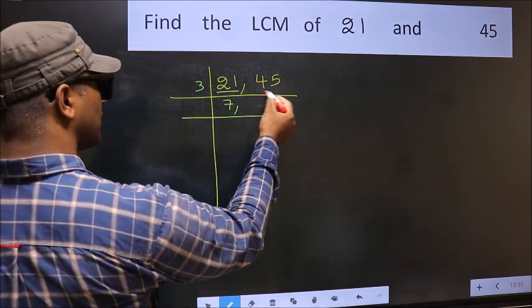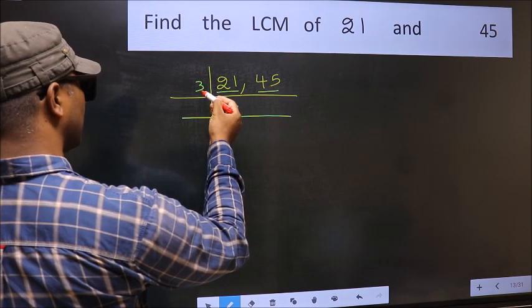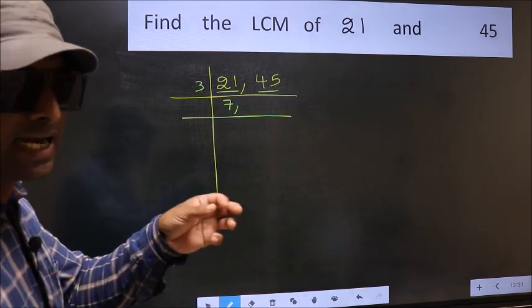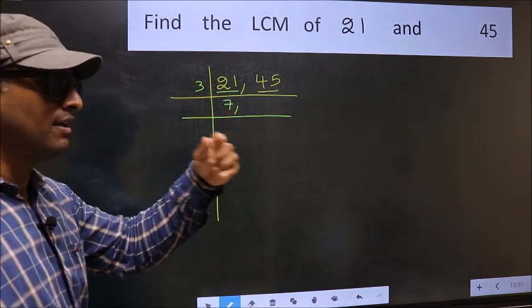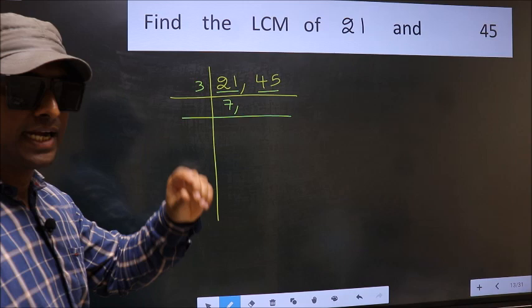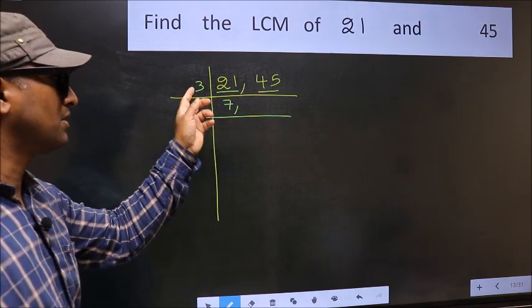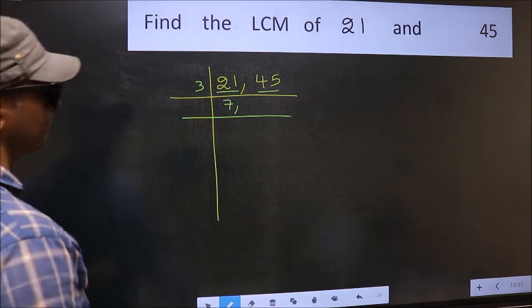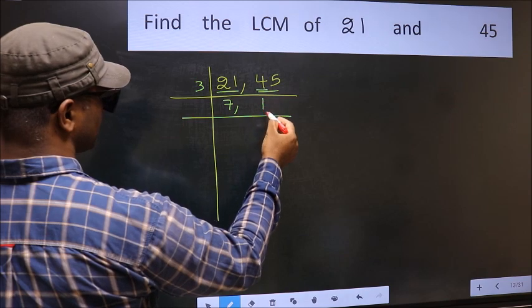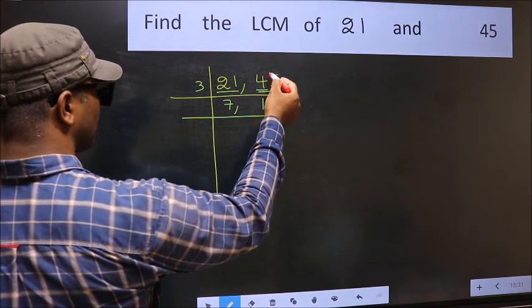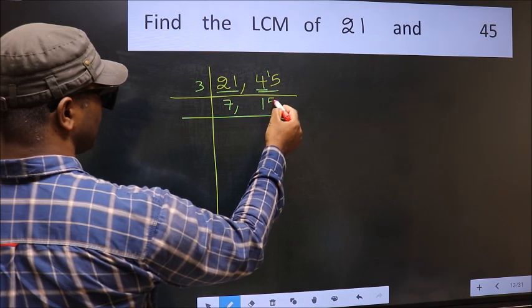The other number is 45. To check whether 45 is divisible by 3 or not, add the digits: 4 plus 5. We get 9, and 9 is divisible by 3, so this number is also divisible by 3. The first digit is 4; a number close to 4 in the 3 table is 3 ones, which is 3. 4 minus 3 is 1, carry forward — 15. We get 15 in the 3 table as 3 fives, which is 15.